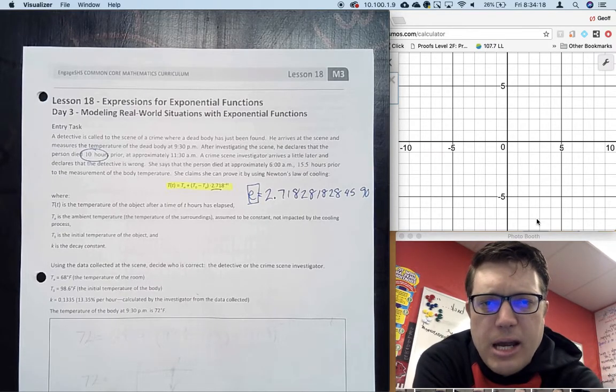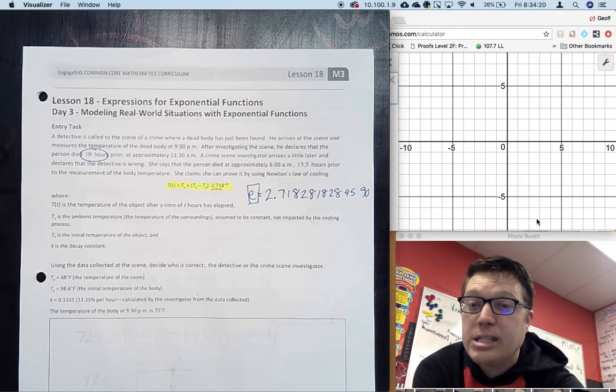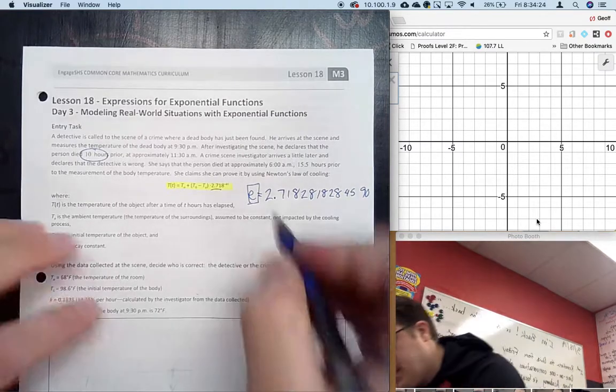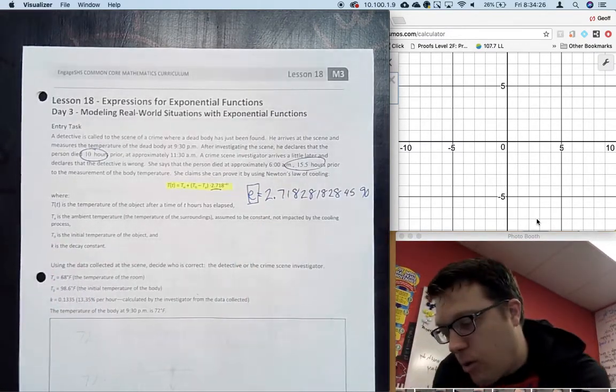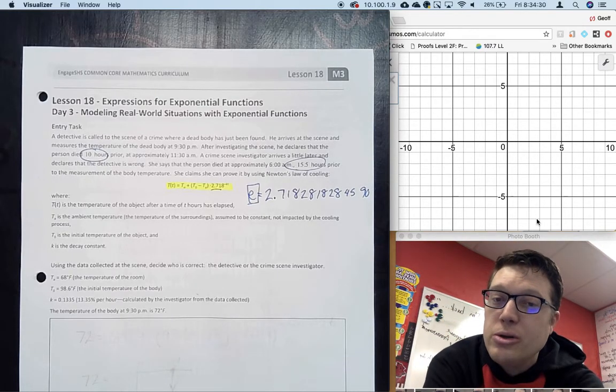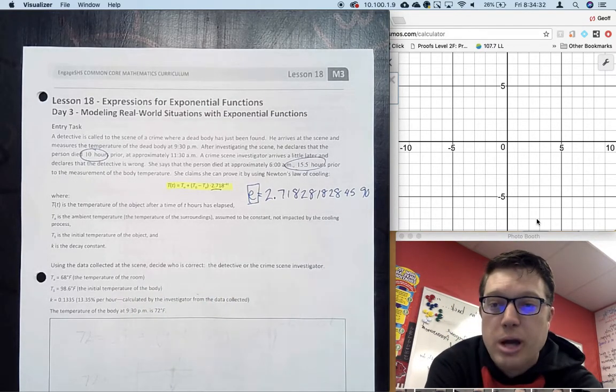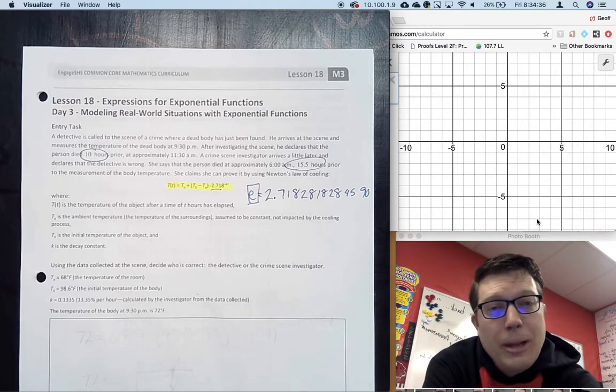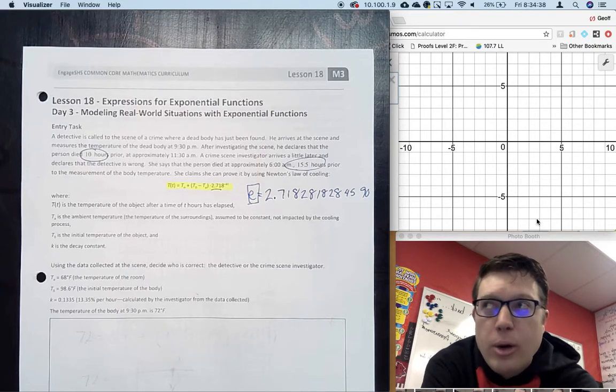A crime scene investigator arrives later and declares the detective is wrong. She says the person died at approximately 6 AM - 15.5 hours prior to the measurement - and she claims she can prove it using Newton's Law of Cooling. We're going to build the function using the numbers we have.